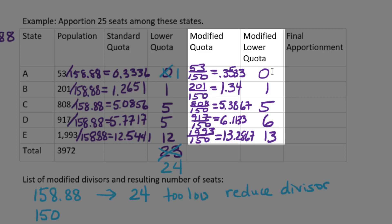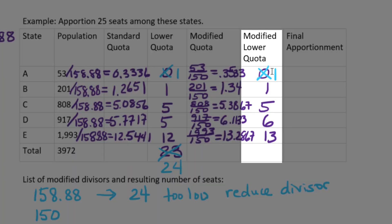Except of course we can't have 0, so I'm going to put a 1 there. So 1 and 1 is 2, and 5 is 7, and 6 is 13, and 13 is 26.